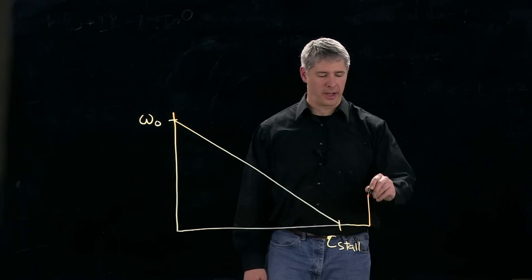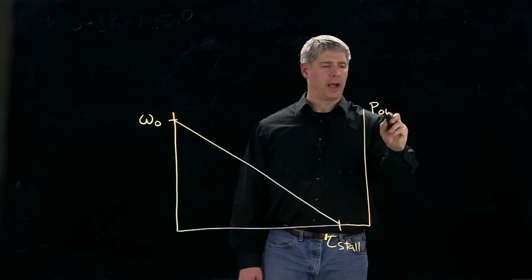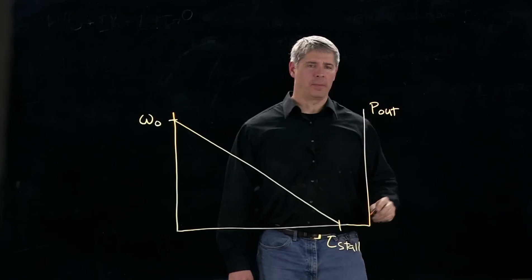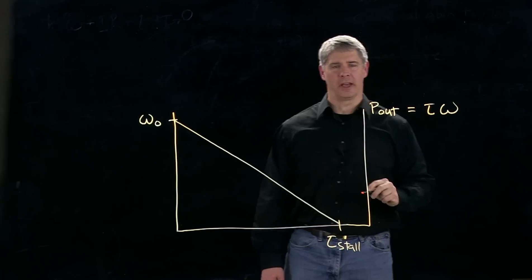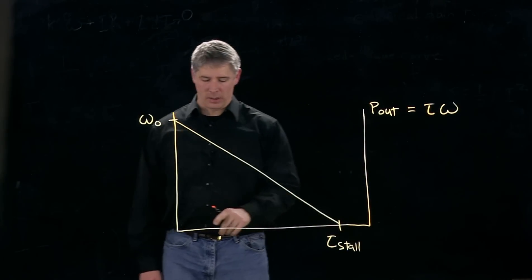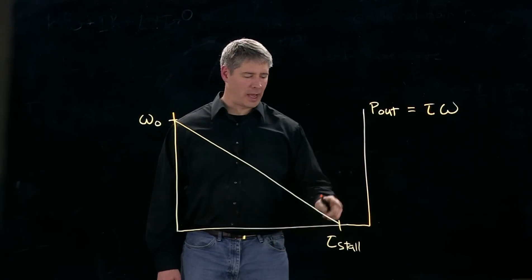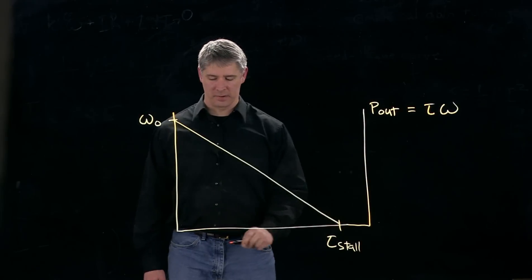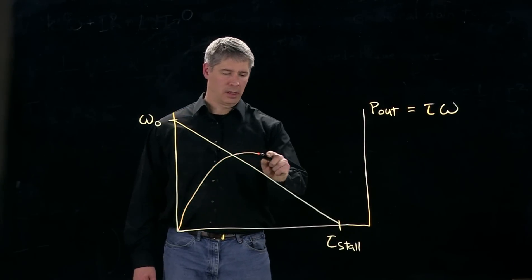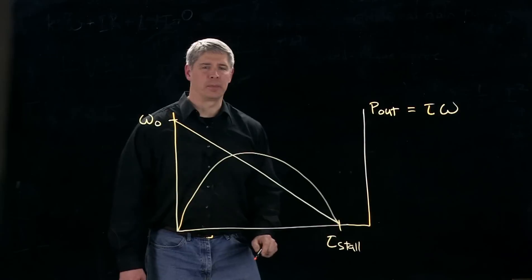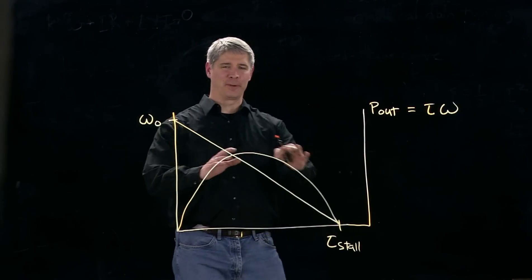So let me draw a third axis here, call it P sub out. And we know the output power is just equal to the torque times the angular velocity. So if we plot the output power here as a function of the torque, it looks something like this, a parabola. It's not perfectly drawn.